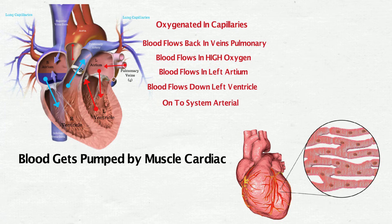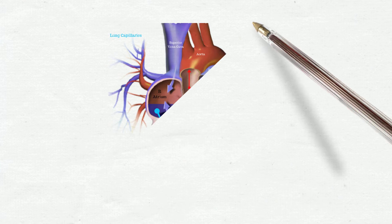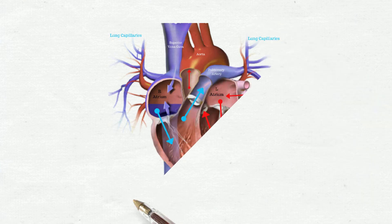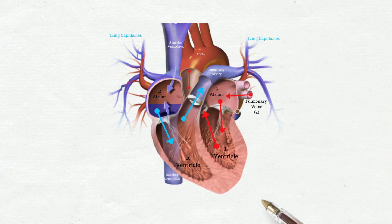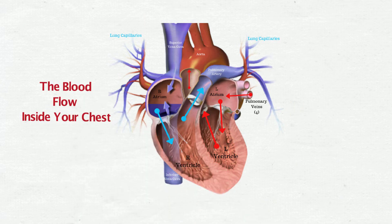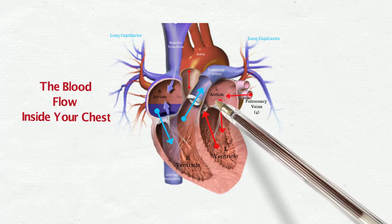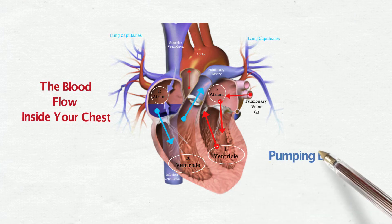Blood gets pumped by the cardiac muscle, blood gets pumped by myocardium. Top down right to left, blood flow inside your chest — atrium in the ventricles, pumping blood through your vessels.